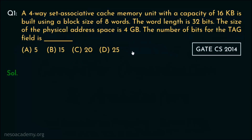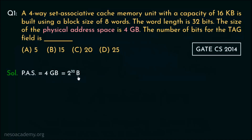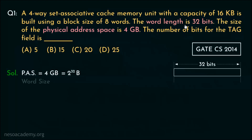Let's try to solve it. The physical address space or main memory size is given as 4 gigabytes, which in terms of bytes is 2 to the power 32, because 4 is 2 squared and gigabyte is 2 to the power 30, giving us 2 to the power 32 bytes. Therefore, the physical address is 32 bits.